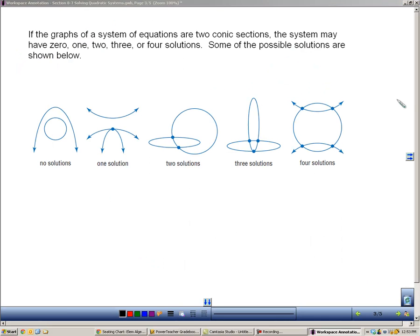Now in the last slide, we had a line and a conic section. But what happens if the two graphs are both conic sections? This doesn't represent all the different ways that two conic sections could intersect, but you can still have no solutions or 1, 2, 3, or even 4 solutions.